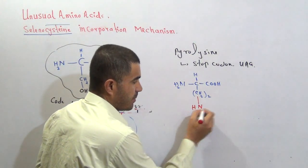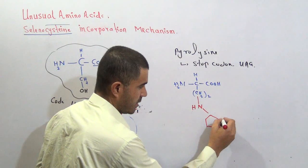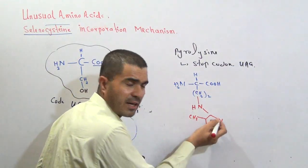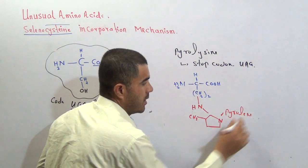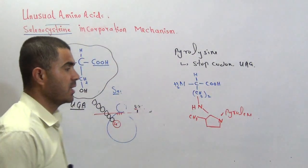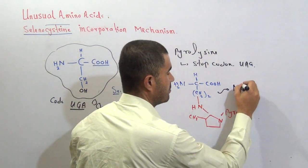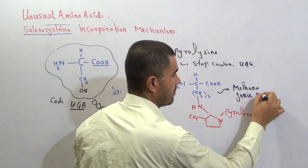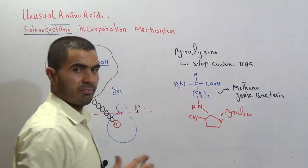In pyrrolysine, one hydrogen on the terminal nitrogen is replaced by a ring — a five-membered ring called a pyrrolysine ring, with a CH3 group and a nitrogen. So if you replace one hydrogen with this pyrrolysine ring structure, it becomes pyrrolysine — another amino acid. This amino acid is present in special bacteria called methanogenic bacteria, found in the protein of methanogenic bacteria and not found in other mammals.